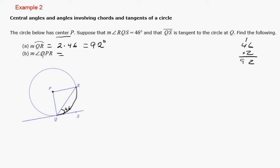And so now, what's the measure of QPR? So that's the same as the arc because that's a central angle. It's the same as the arc, so it's going to be 92 degrees as well. Alright, so good luck with that.